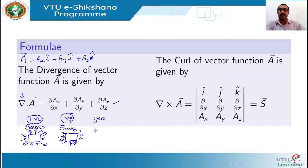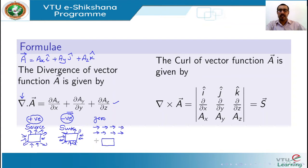If the divergence is zero, the vectors in the vector field are of equal magnitude and parallel — there is no divergence. In this case, the number of flux lines entering a region equals the number leaving. This is the interpretation for divergence.